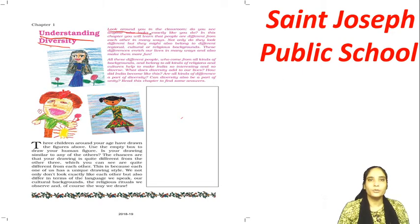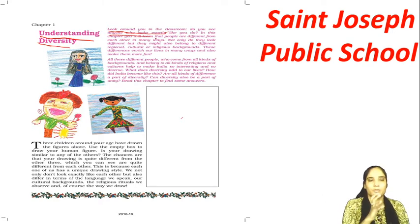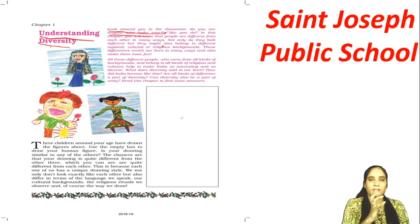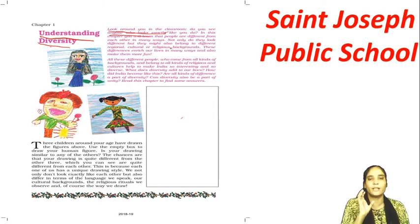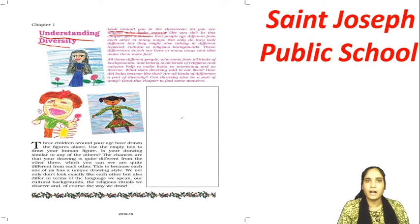Look around you in the classroom. Do you see anyone who looks exactly like you? You are not in the classroom this time, but you can look around yourself. The question is: do you find anyone who looks exactly like you? In this chapter you will learn that people are different from each other in many ways, and when you look around, you will see that no one looks exactly like you.